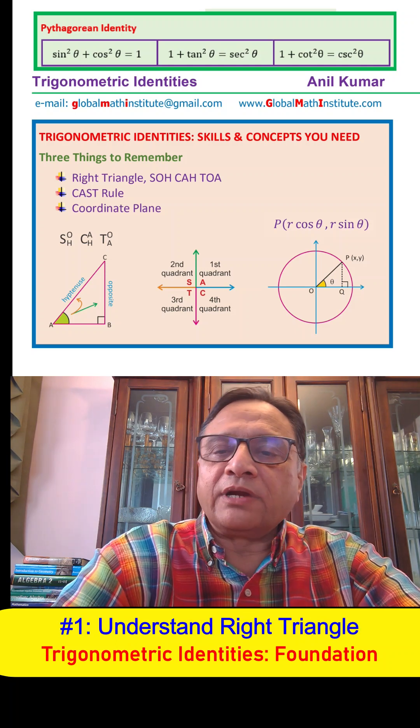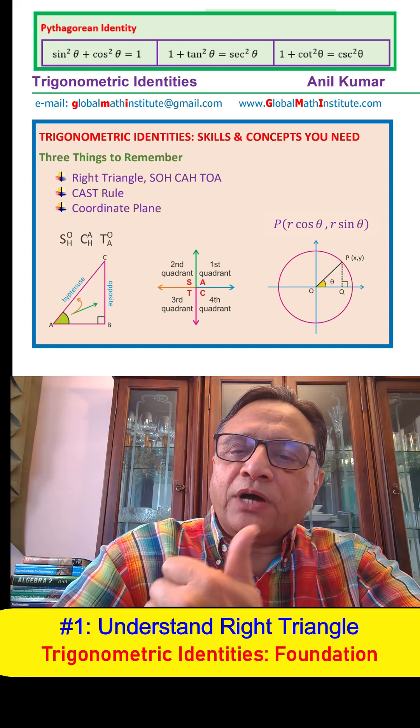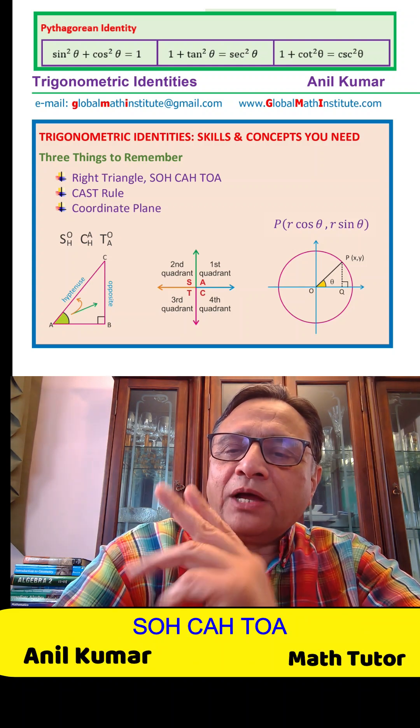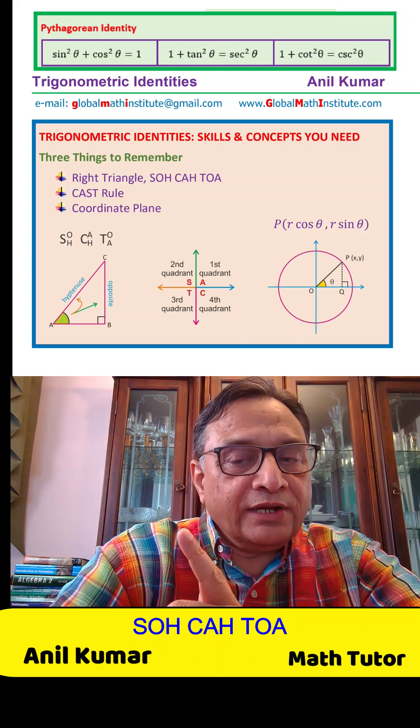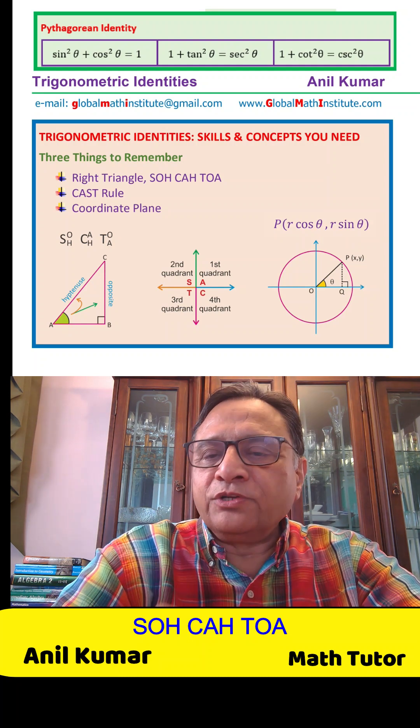One, understand your right triangle. The ratio of opposite side to hypotenuse is called sine, and the ratio of adjacent to hypotenuse is cosine. The ratio of opposite to adjacent is tan. We remember using SOH CAH TOA.